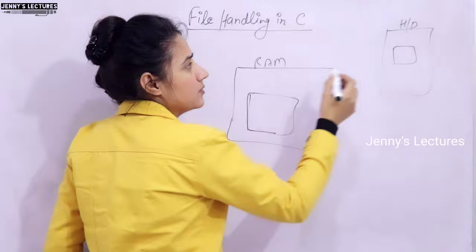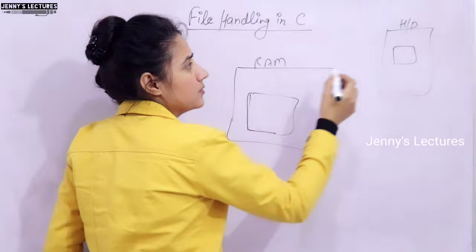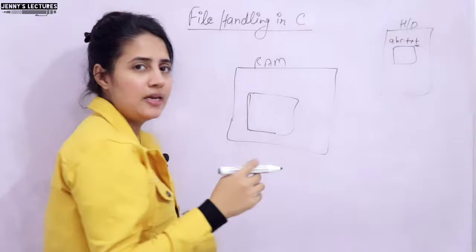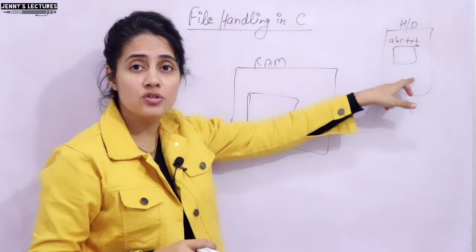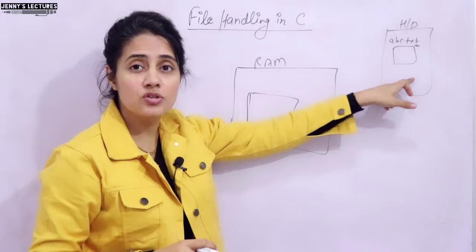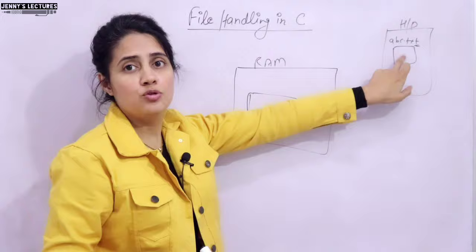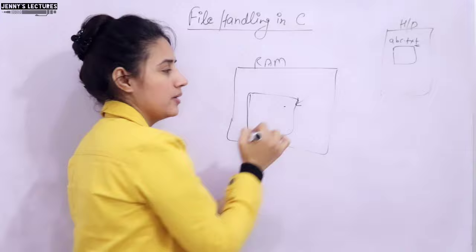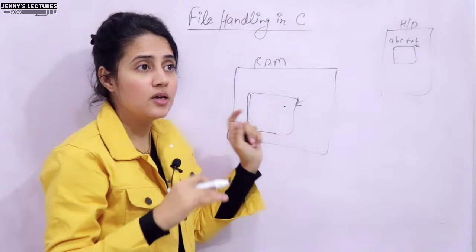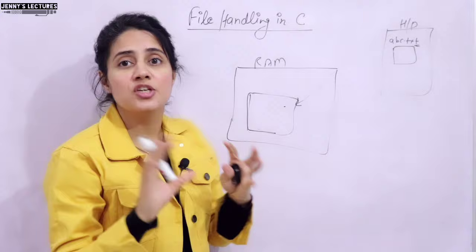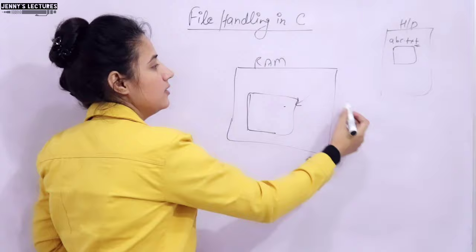Suppose I have a file called abc.txt on the hard disk. If you want to perform some file operation — like create, open, read, write, or append — you cannot directly access this file. The file needs to first be loaded into main memory; a copy of the file is loaded in main memory while processing. So you need a special pointer — a file pointer — to work with this file.